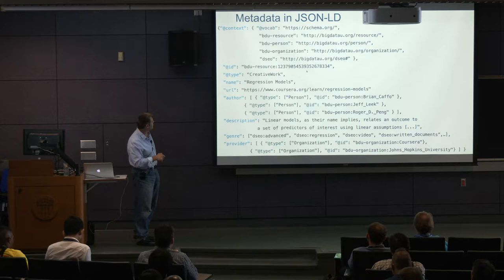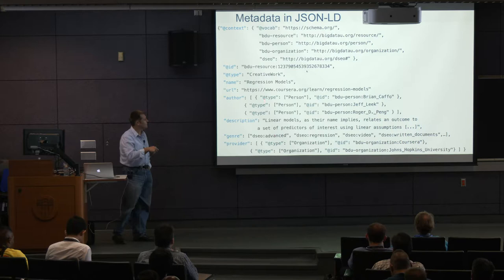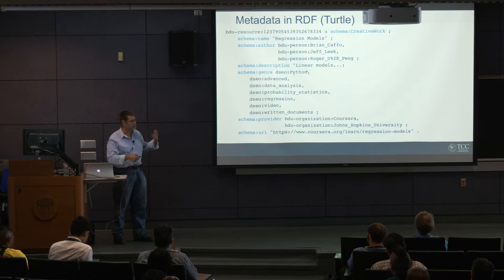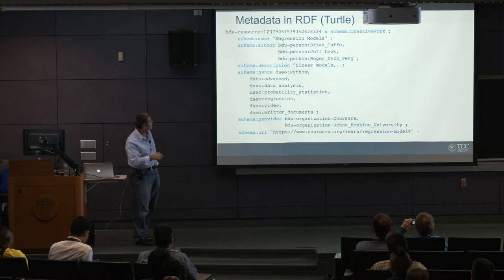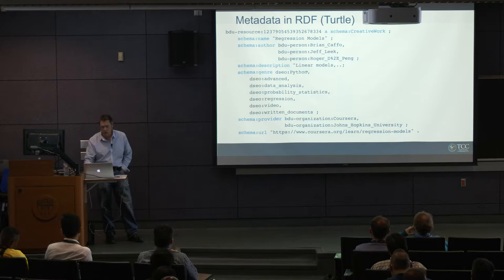Here is how it looks. There is a resource — it's a creative work mapped into schema.org. It's a course about regression models, taught by Ryan Caffo, Jeff Leek, and Brian Caffo, at Johns Hopkins University, also on Coursera. We have a description and all these records extracted from all 12,000 resources. The instructors are not just strings — they are actual objects. We have it in both JSON-LD and RDF, which is another way of describing data on the semantic web. The authors are not just strings — it's not a string but an actual object with information about that person.